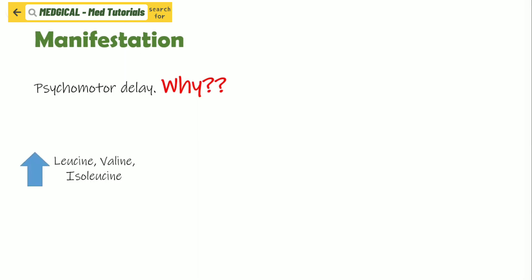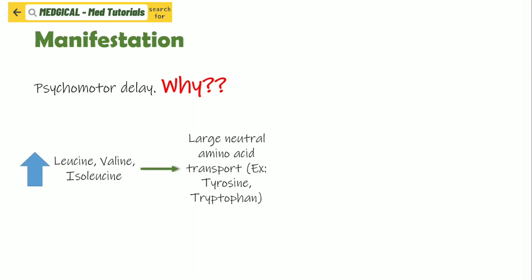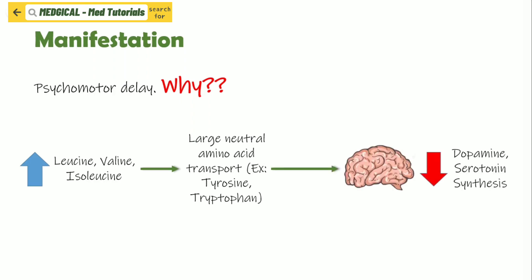Why does psychomotor delay happen in patients with Maple Syrup Urine Disease? There will be accumulation of leucine, valine, and isoleucine in the human body. This leads to impaired large neutral amino acid transport — for example, tyrosine or tryptophan — into the central nervous system. This will result in a decrease in dopamine and serotonin synthesis. Since dopamine and serotonin are important for our psychological states, a decrease in neurotransmitter synthesis will lead to psychomotor delay.